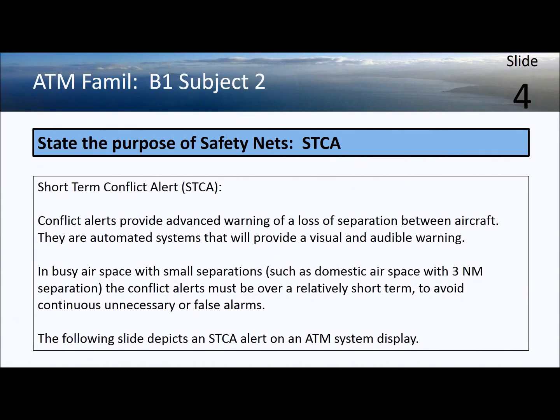STCA, short-term conflict alerts, generate a visual and audible alarm at the CWP — the controller work position — when two aircraft are likely to have a loss of separation and be in danger of collision. Short-term alerting systems are used in busy controlled airspace because longer-term warnings would occur too often. Frequent false alarms can condition controllers to ignore them or treat them with less urgency, which is a result we want to avoid.